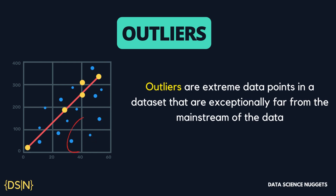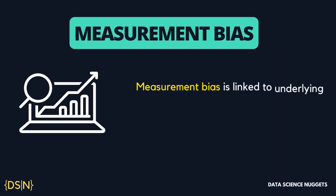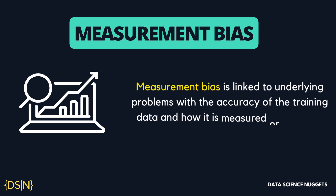Outliers are extreme data points in a dataset that are exceptionally far from the mainstream of the data. Outliers can be caused by measurement or input error, or data corruption. If an experiment's results are aimed at making decisions based on the average or majority of the population, then extreme data points will alter this decision, causing bias in the output.